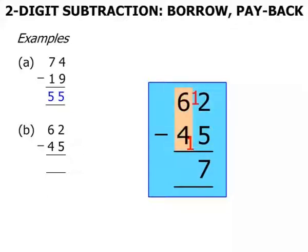Then we've got 6 up there and 4 and 1 down there is 5. So 6 minus the 5 is 1. So our answer there is 17.